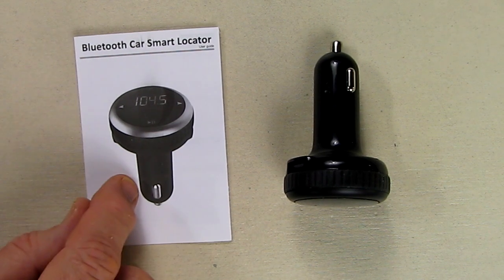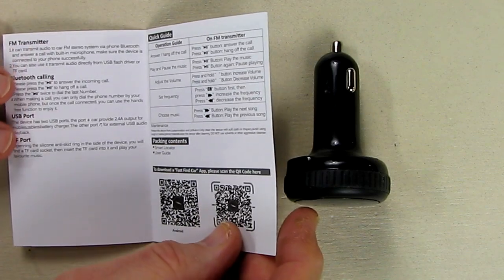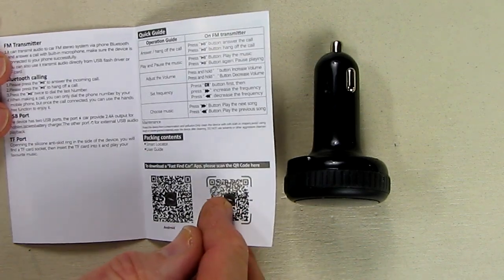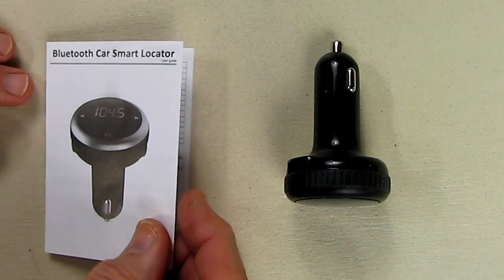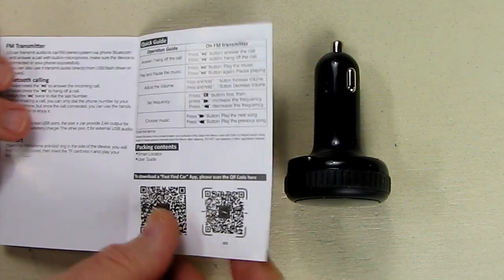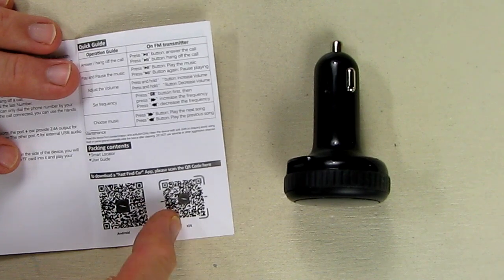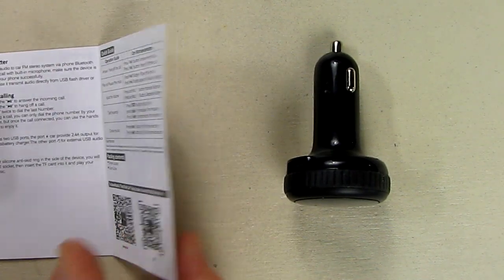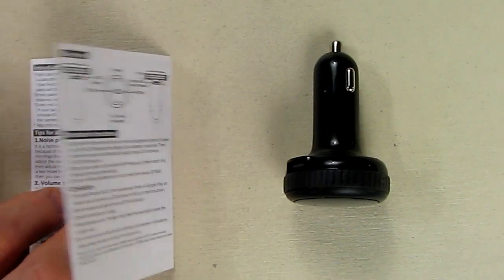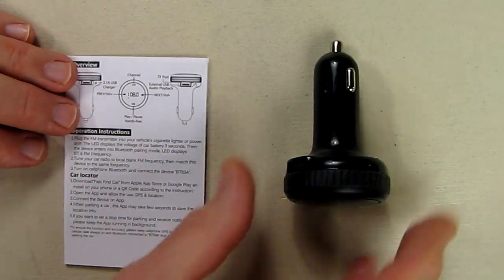It comes with a little instruction booklet which tells you how to download one of the apps. They are talking about an app called a smart locator. You could download it. It's just independent of this product. This allows you to locate where your car is parked. But the manual also talks about how to operate the device.